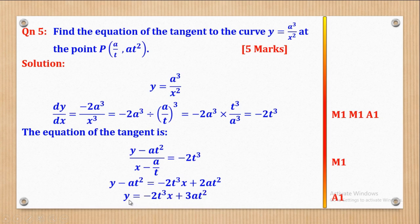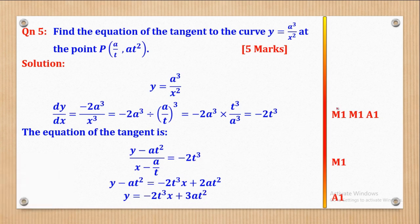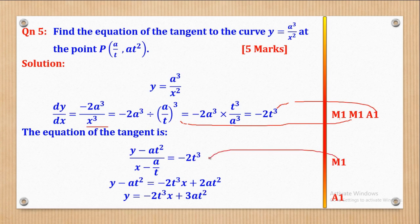So y = −2t³x + 3at² is the equation of the tangent which was required. For the marking: the first M1 is for differentiating to get dy/dx; the second M1 is for substituting; the third M1 is for simplifying to get the gradient; and the fourth M1 is for getting the equation of the tangent, with A1 for simplifying. That's how the 5 marks come about — mark yourself and make corrections where you went wrong.